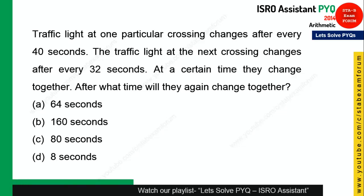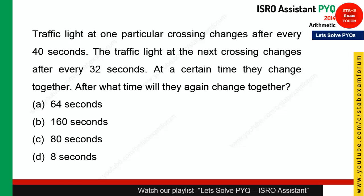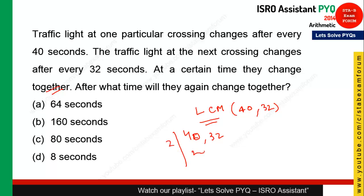Next question: a traffic light at one crossing changes every 40 seconds, and at the next crossing it changes every 32 seconds. When do they change together? You need to use LCM. Taking LCM of 40 and 32: factoring gives 20 and 16, then 10 and 8, then 5 and 4 — multiplying all together gives 160. So 160 seconds is the correct answer.